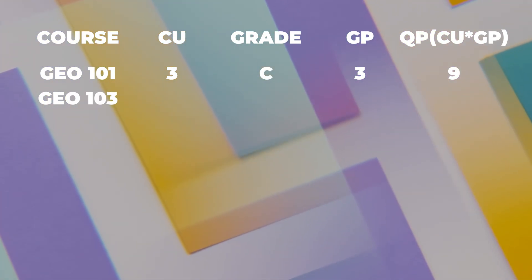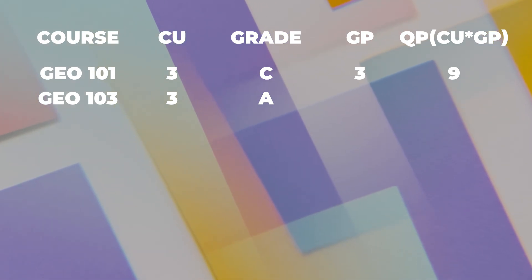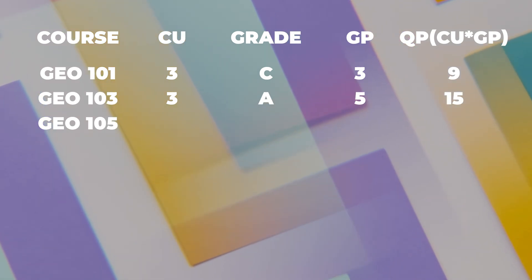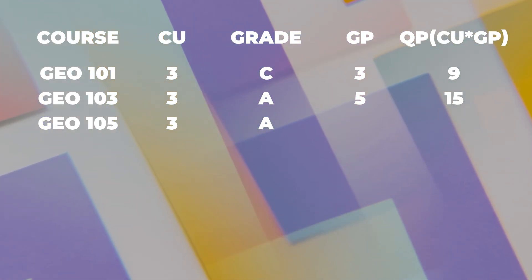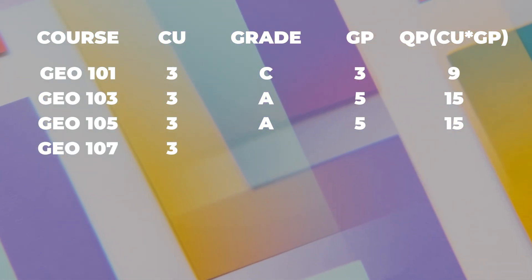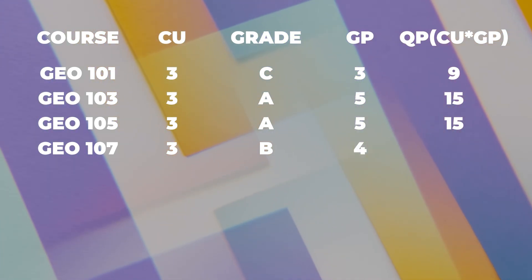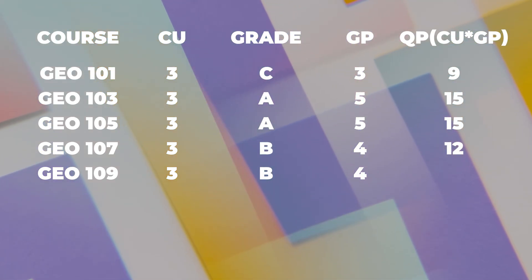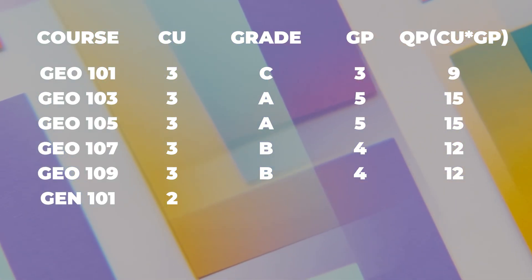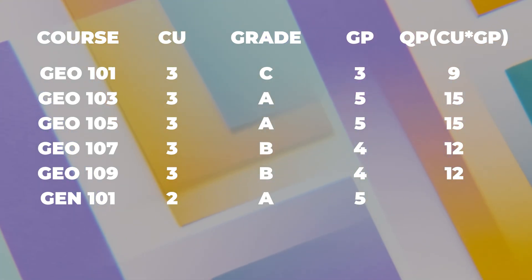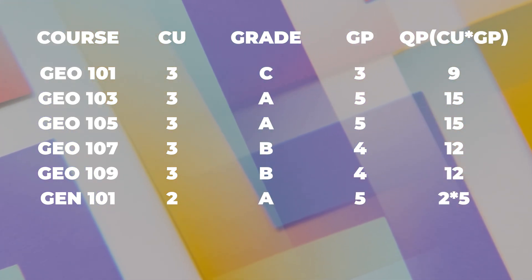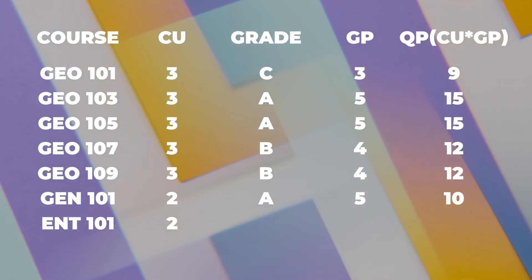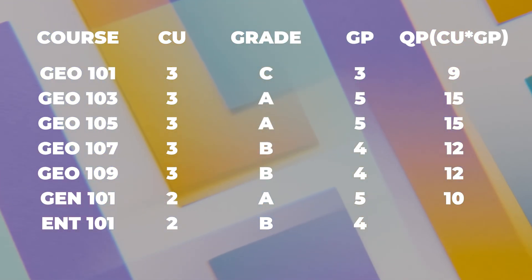GEO 103, a 3 credit unit course, is graded A, giving a quality point of 15. GEO 105 is graded A with a quality point of 15. GEO 107 is graded B with a quality point of 12. GEO 109 is graded B with a quality point of 12. GEO 101 is graded A with a quality point of 10, because it's a 2 credit unit course. Another GEO 101, a 2 credit unit course, is graded B, giving a quality point of 8.